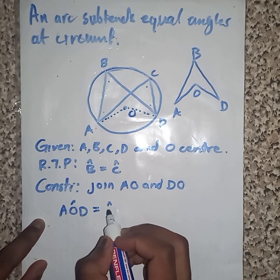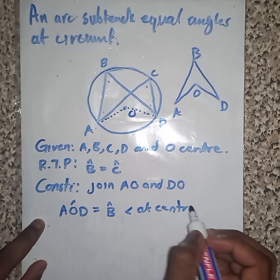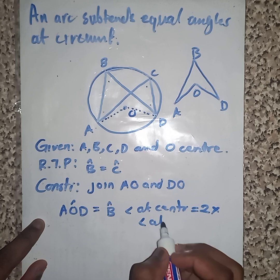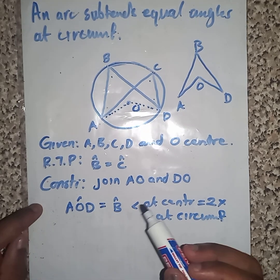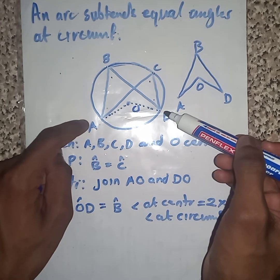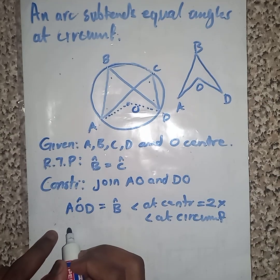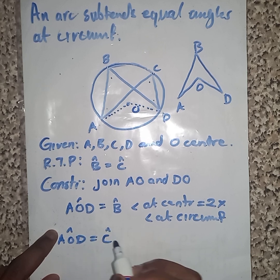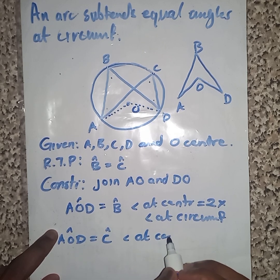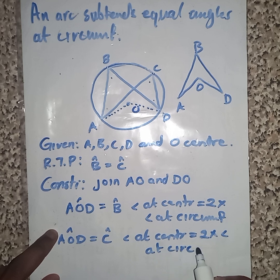AOD is equal to... angle at center is two times angle at circumference. We also have the same one again. The angle at center is two times the angle at circumference. AOD is equal to angle C, the angle at center is two times the angle at circumference.